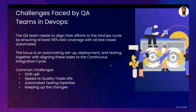Walking through the first challenge — shift left and continuous testing: DevOps emphasizes shifting left, which means testing early and often in the development cycle. This requires the QA team to integrate testing seamlessly into the daily workflow of development, which can be a significant change from traditional models where testing was a distinct phase. QA teams must adapt by developing automated tests that can run effectively in every stage of the CI/CD pipeline. The second challenge is speed versus quality trade-off: DevOps prioritizes speed and efficiency in delivering updates and new features. QA teams are challenged to maintain a high standard of quality without slowing down the development and deployment process, which can sometimes create tension as the drive for rapid releases may compromise the thoroughness of testing.